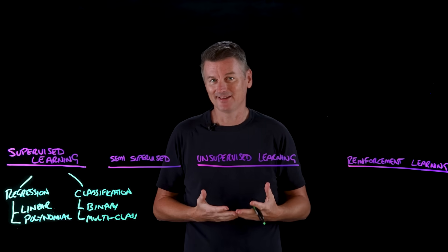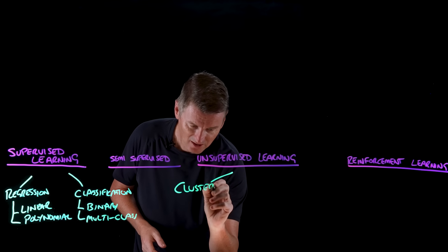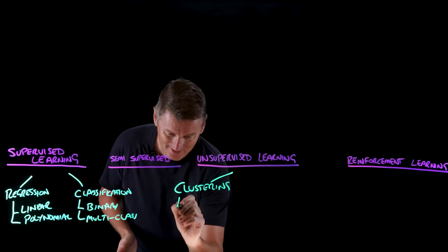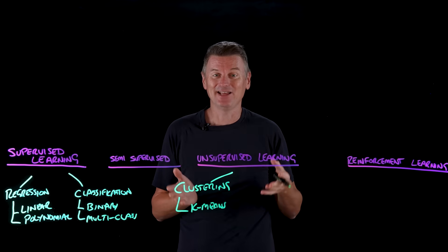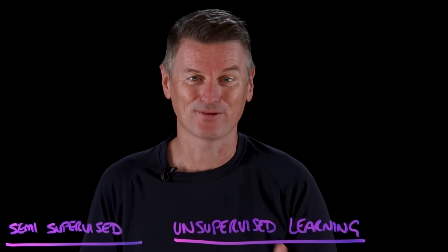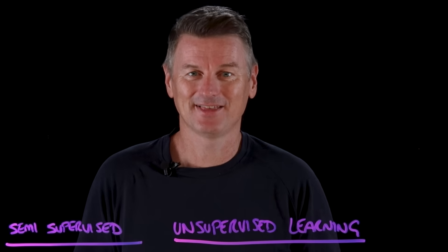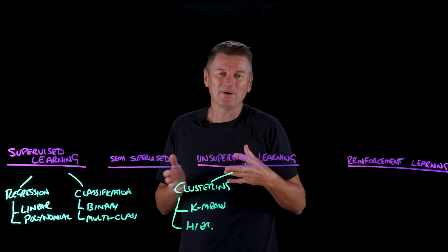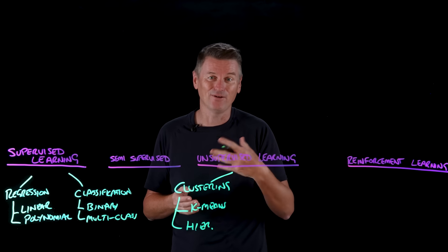Unsupervised learning works with unlabeled data to uncover structure on its own. One common family is clustering, which groups similar items so things that behave alike end up together. A well-known method is k-means clustering: you choose k groups, repeatedly assign each item to the nearest group average, then recompute the averages until stable. For example, you could split customers into k equals four segments — bargain hunters, loyal repeaters, big-ticket buyers, and browsers — and target offers to each group. Another method is hierarchical clustering, where you start with every item by itself, then keep merging the most similar groups to build a tree, and cut the tree later for three, five, or twelve clusters.